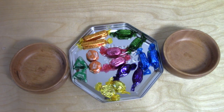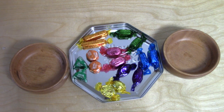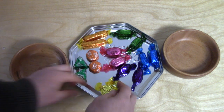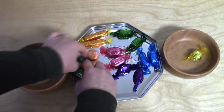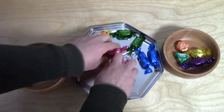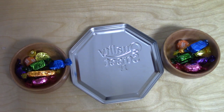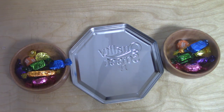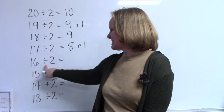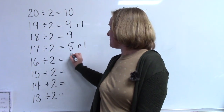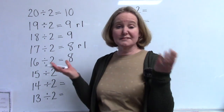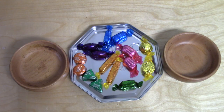I have sixteen candies. Do you have sixteen objects? I'm going to have you divide them into two groups. Divide them with me. One, two, three, four, five, six, seven, and eight. Sixteen divided by two is eight with no remaining. We just divided sixteen candies into two bowls and that was eight without any left over.